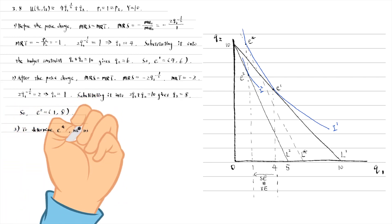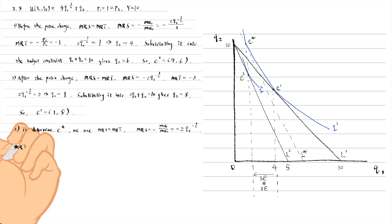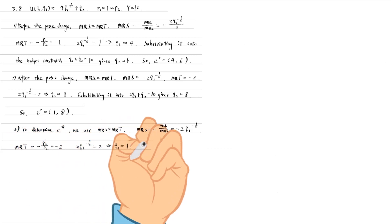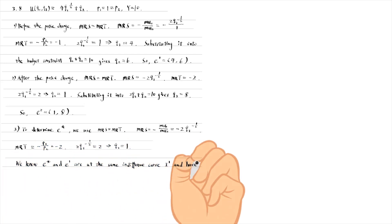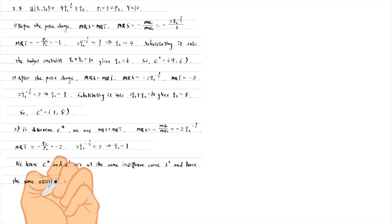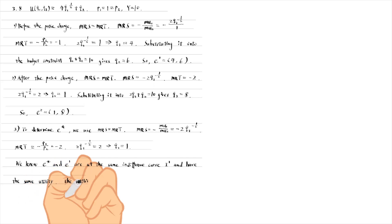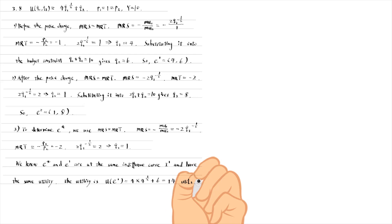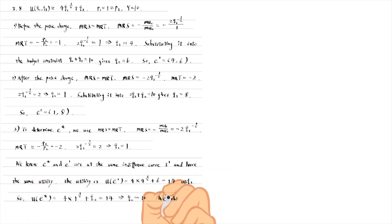In the third step, we need to determine the bundle E*. It is the point where the consumer keeps the original utility but faces the new prices. The imaginary budget line L* has the same slope as the new budget line L2 and is tangent to the original indifference curve I1. Using the tangency condition, we obtain the optimal quantity of Q1, which is 1. Then we use the fact that E* and E1 are on the same indifference curve and have the same utility. We already know the quantities at E1 and can compute the utility level for the indifference curve I1, which is 14 utils. So we get the quantity of Q2 at E*.